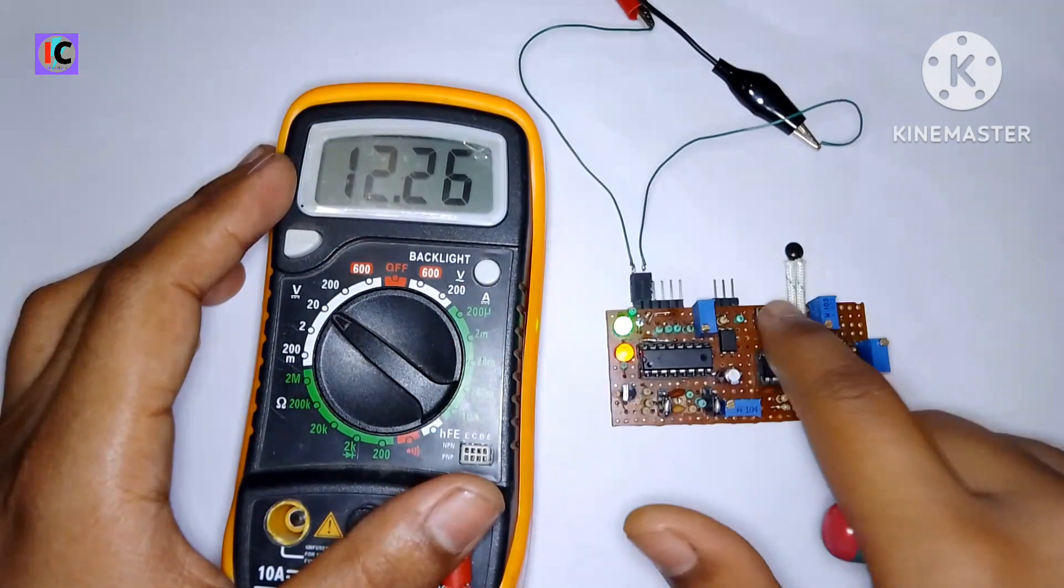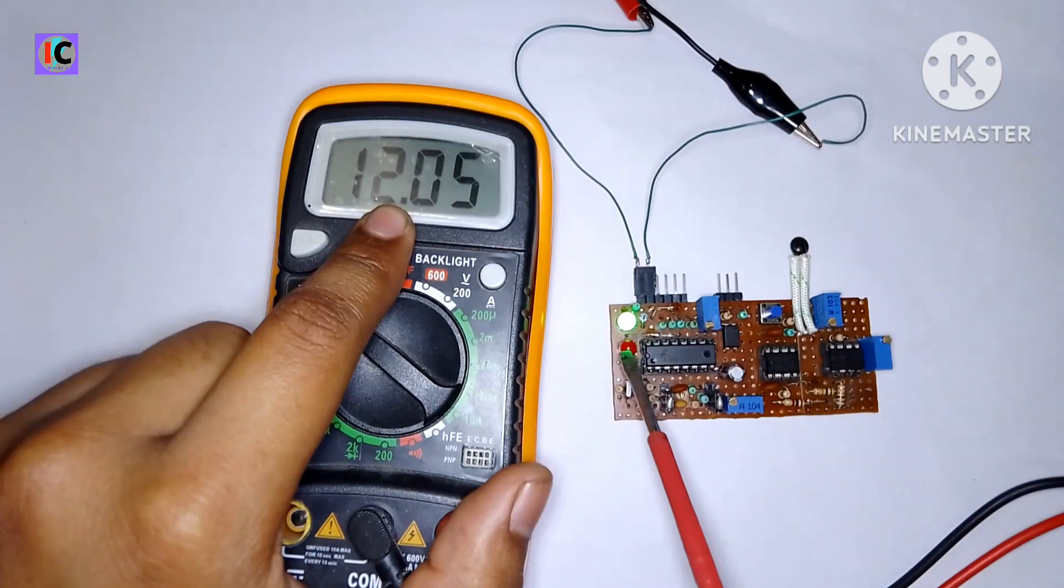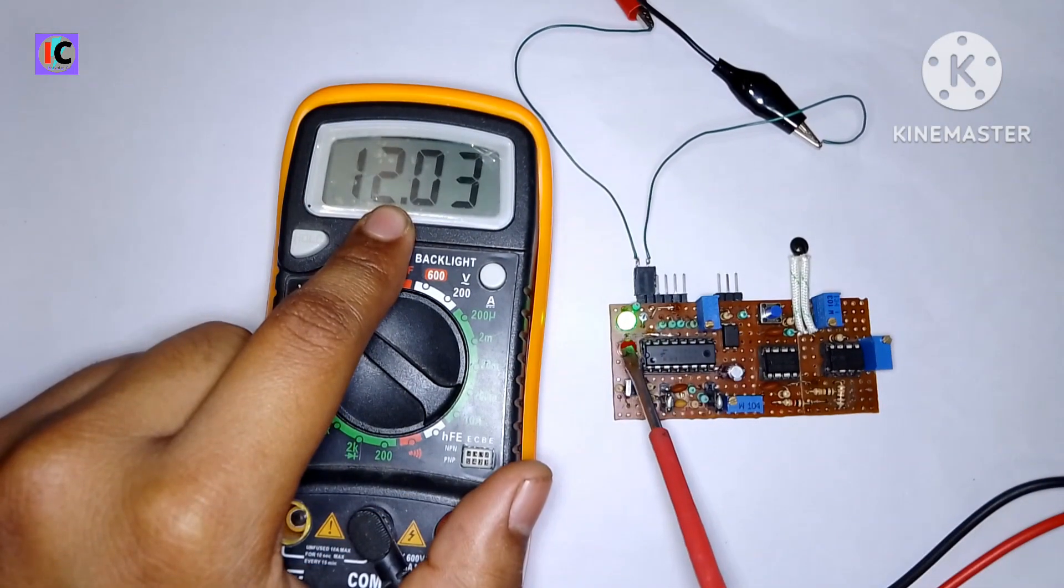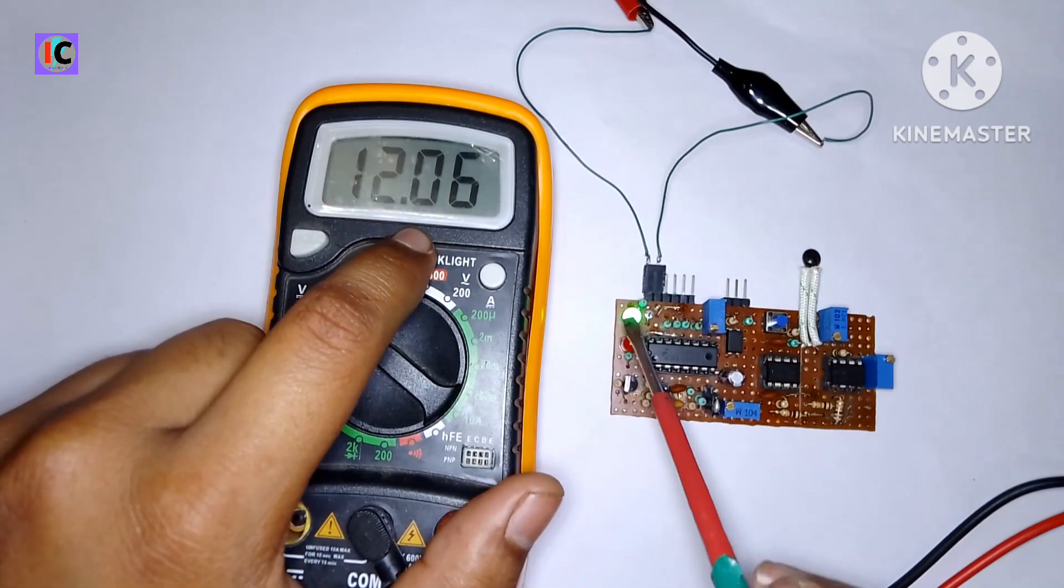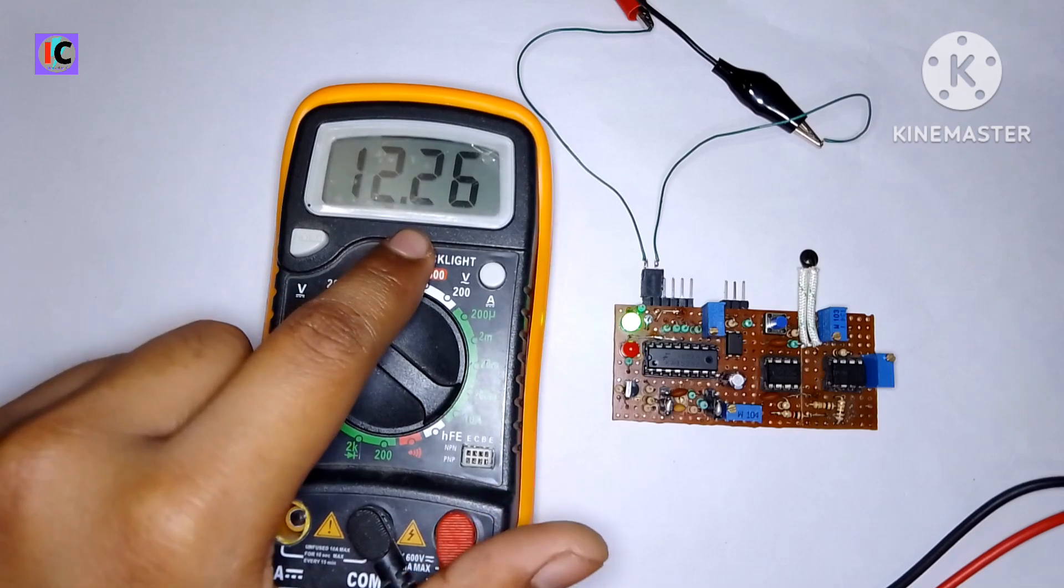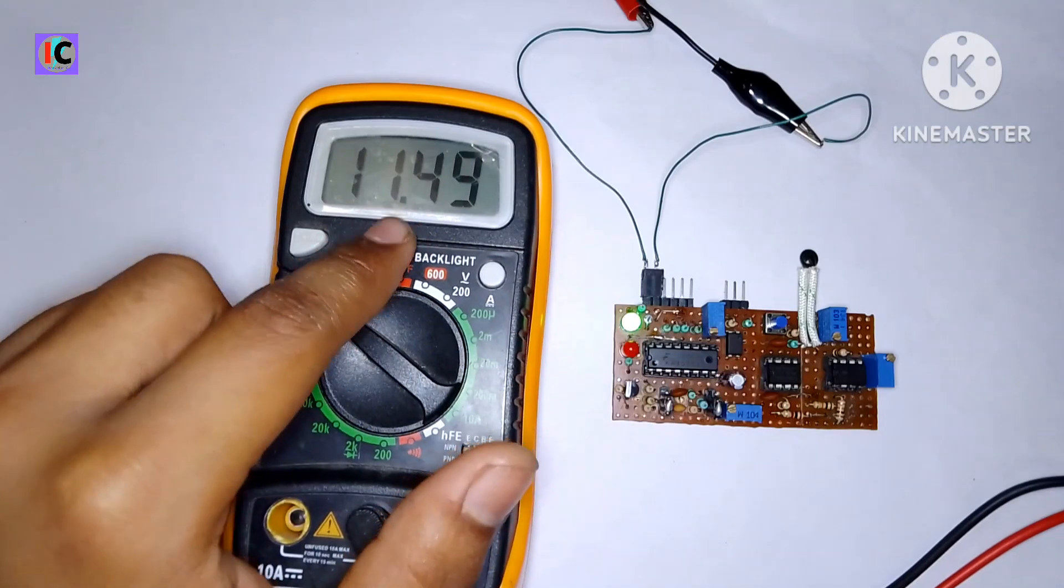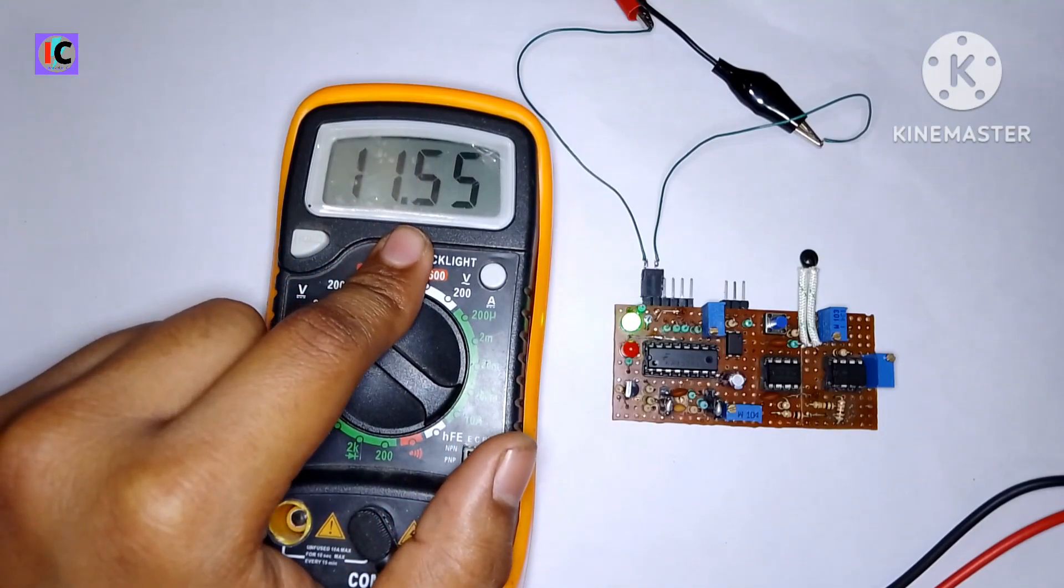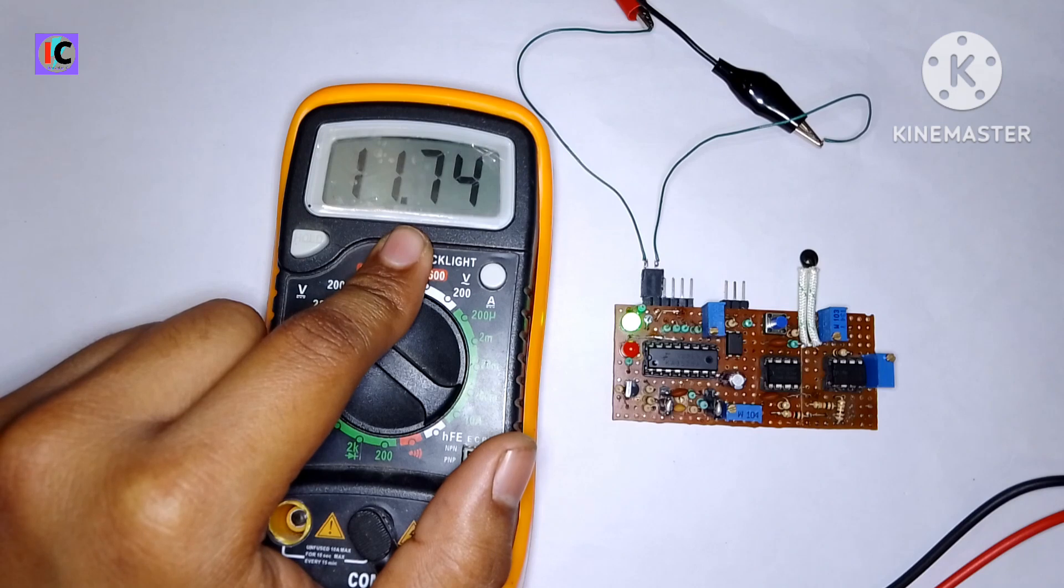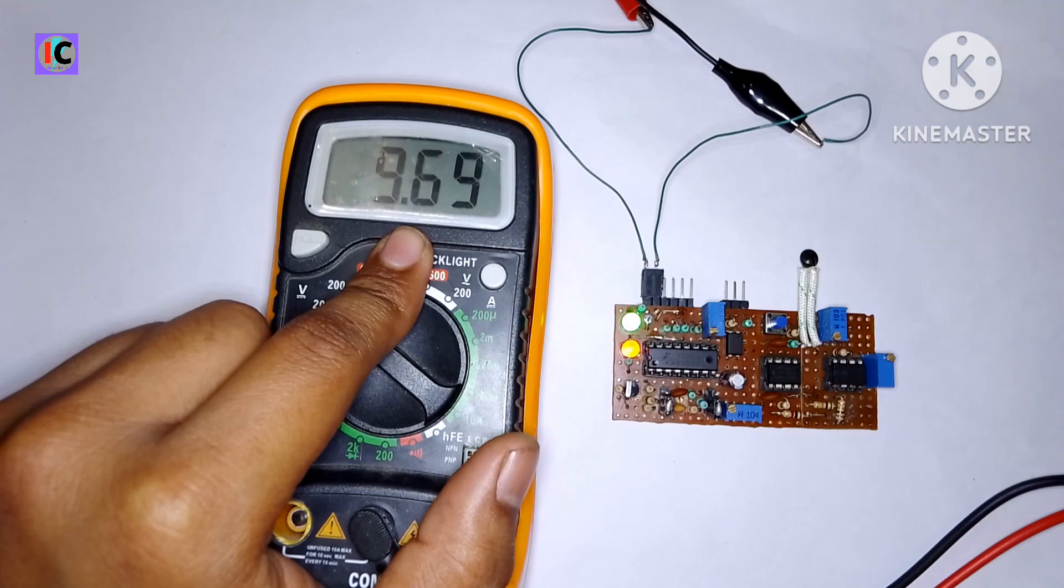It's 12 volts now. Press the reset switch to work normally. The red LED indicates it's shut down and the green is for power. Now I'm decreasing the voltage. I set this to almost 10.5 volts, so when the voltage goes below 10 volts then the PWM circuit shuts off.